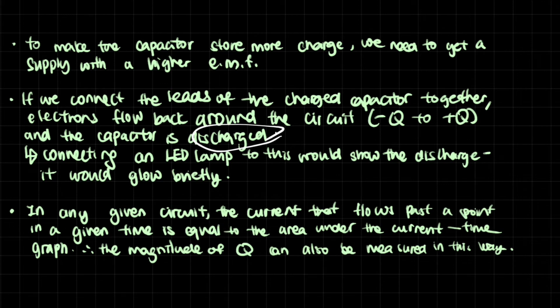In any given circuit, the current that will flow past a point in a given time is equal to the area under the current time graph. The magnitude of the Q can also be measured in this way. This is very straightforward. It basically just means that if you had a time versus current graph, and it was like that, if you integrated this and you got the area under the curve, you would get how much charge has flown through it.